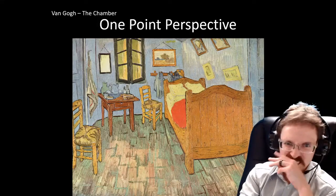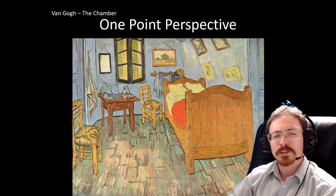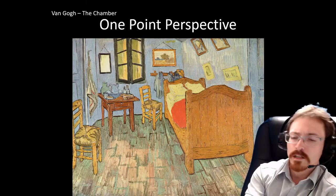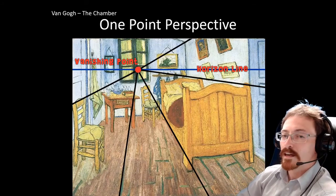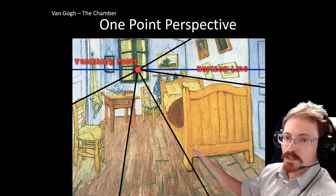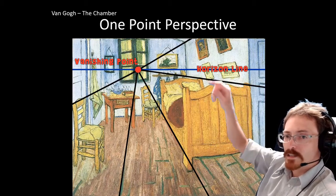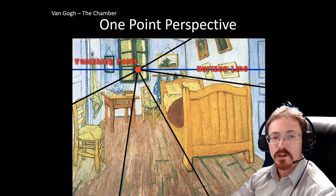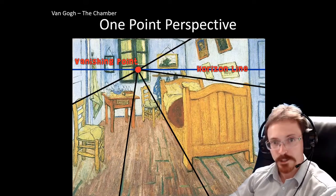For instance, Van Gogh in this artwork has a vanishing point. Can you guess where it is? The vanishing point is actually right there in the window. You can see it by lining up the bed post, the top edge, the horizon line, and the ceiling going down — all of those lines, and the chair, line up to the vanishing point.